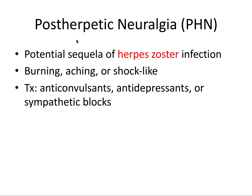Here's another example: post-herpetic neuralgia. We can unpack this word to mean after herpes nerve pain, and that's exactly what it is — it's a potential sequela of herpes zoster infection. From our oral pathology series, herpes zoster is the varicella zoster virus (VZV). It's not the same as herpes simplex virus — that's a very easy way for test makers to trick you. This is not a sequela of herpes simplex, but rather herpes zoster.